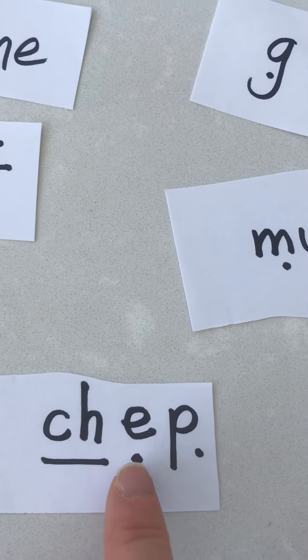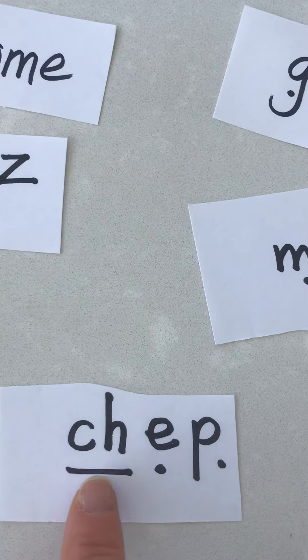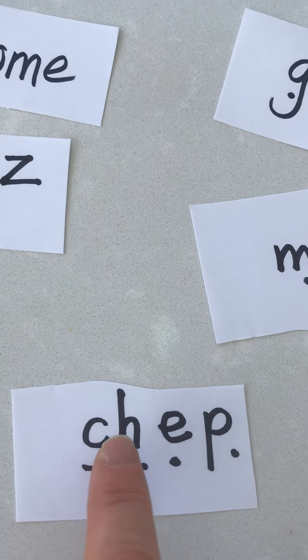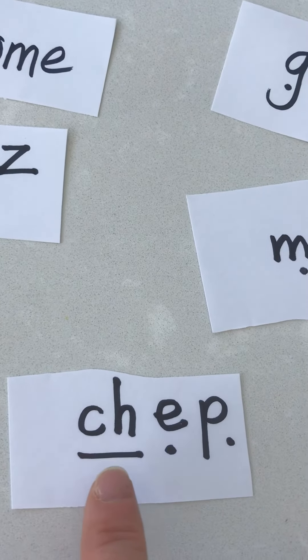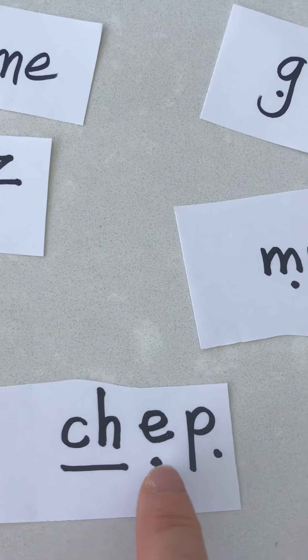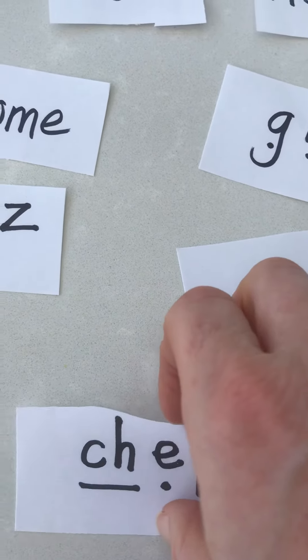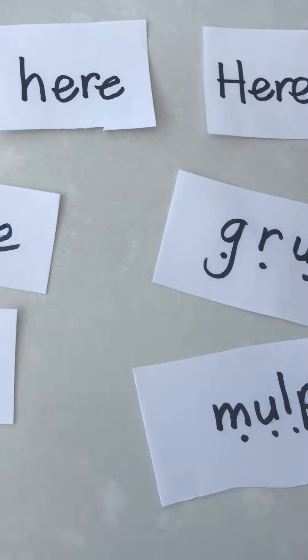Ch-e-p. And you notice the way I have a little line onto it when you have two sounds together, two letters together to make one sound. It's called a digraph. So ch-e-p. Chep is a nonsense word. So we'll put chep in the bin.